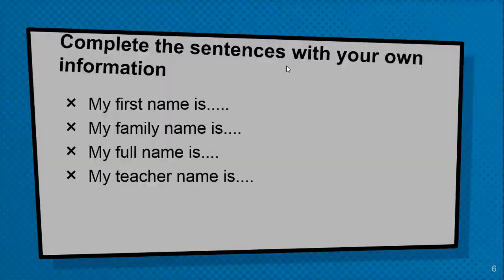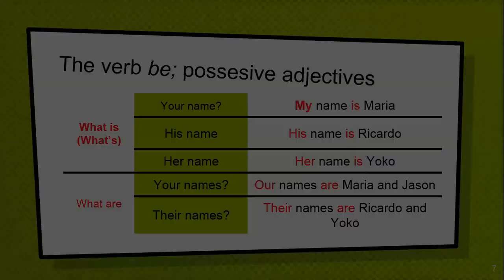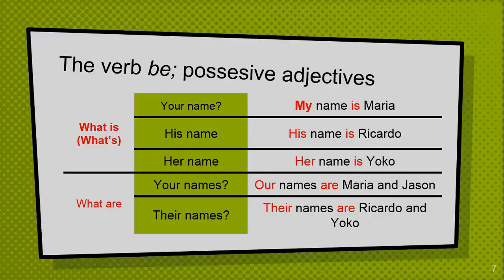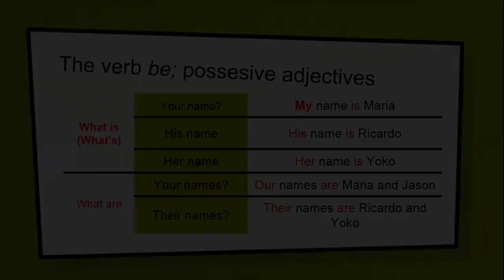Complete the sentence with your own information — you can fill in the blank. My first name is Leah. My family name is Amrina. My full name is Leah Amrina. My teacher's name is Aditya. What is your name? It's very simple — 'What is your name? What's your name? My name is Maria.' 'My' is a possessive adjective.